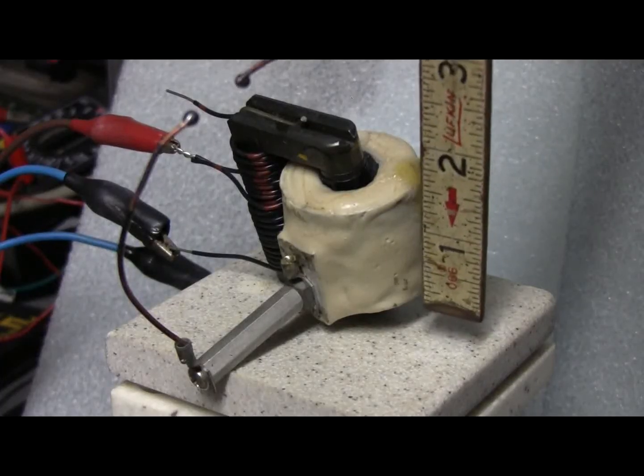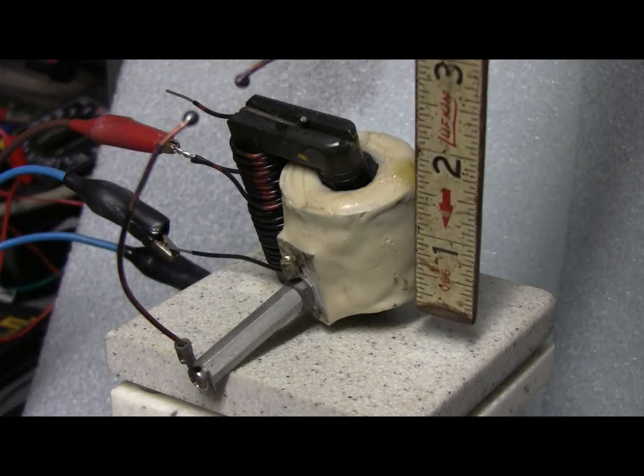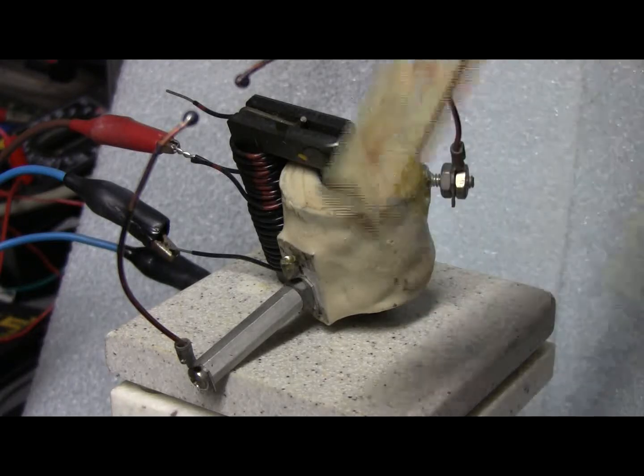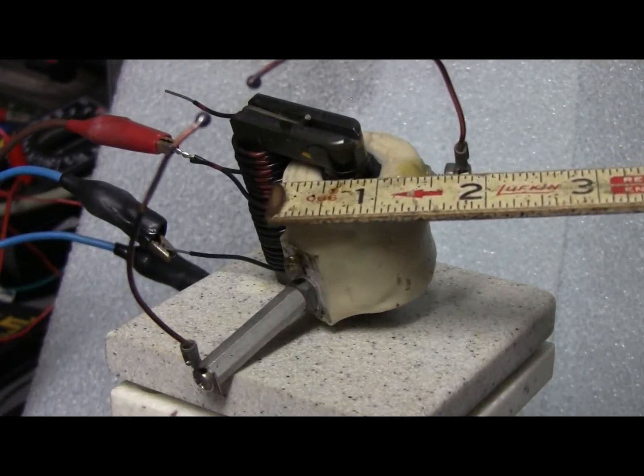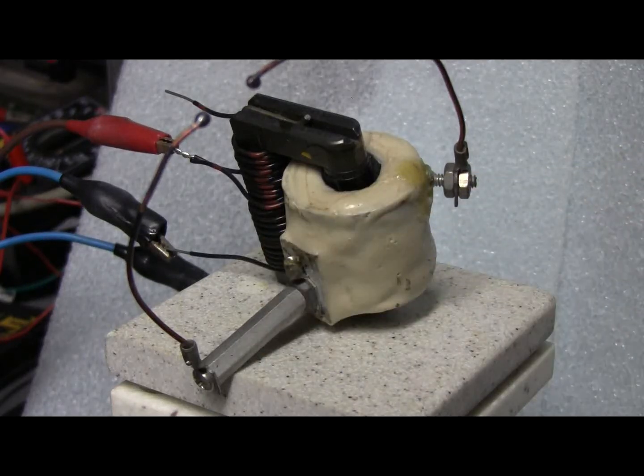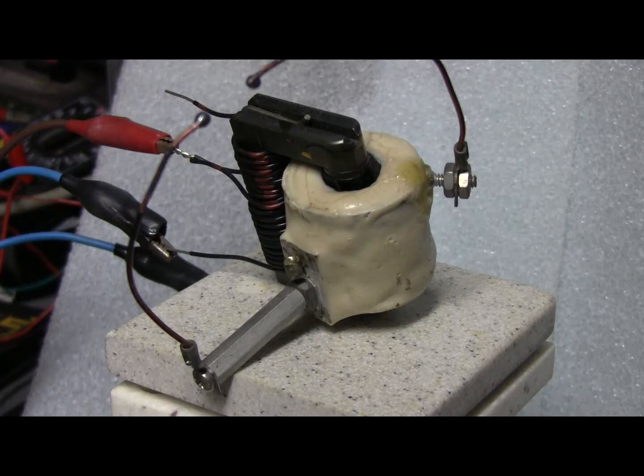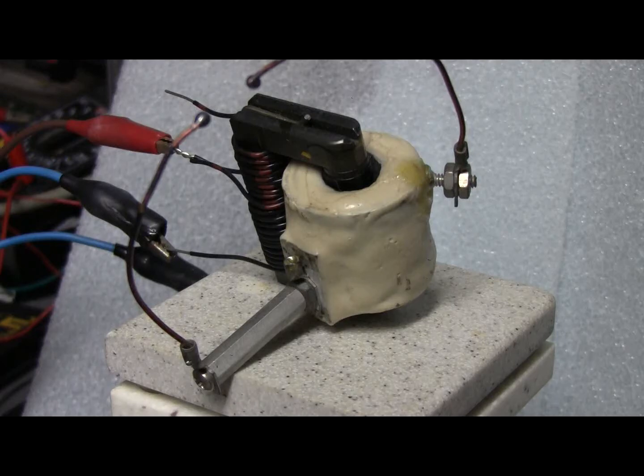This little secondary measures about an inch and a half long by about an inch and a half in diameter. It's wound with number 34 magnet wire. Each layer of wire was insulated in the white epoxy that the finished unit is encapsulated in.